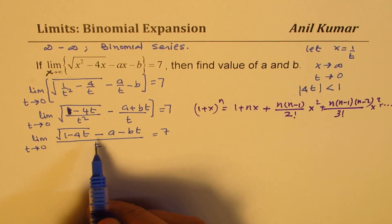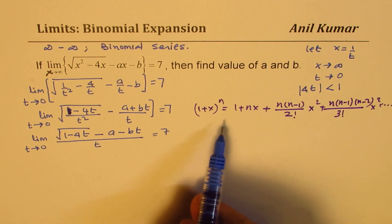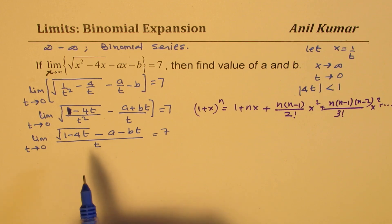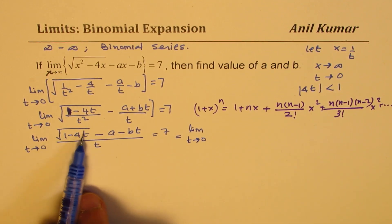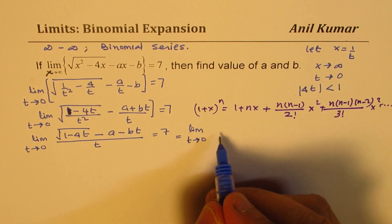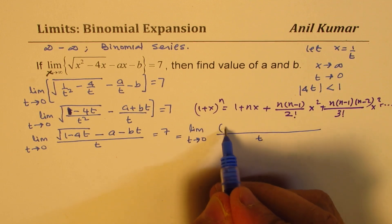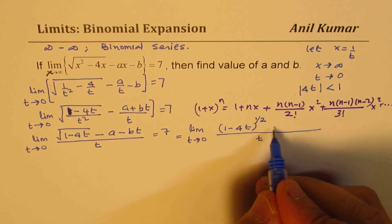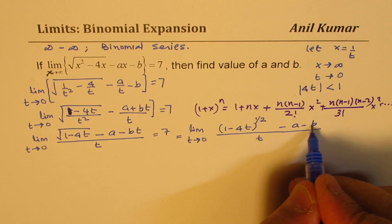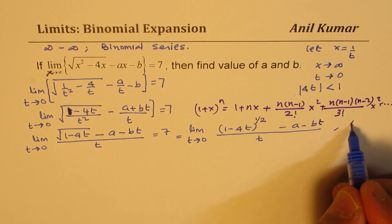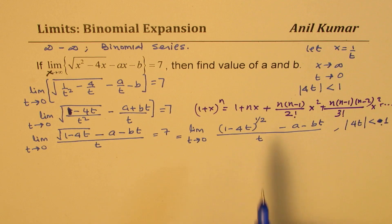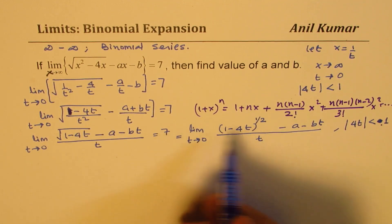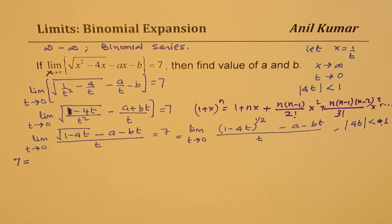Expanding (1 - 4t)^(1/2), the first term is 1, then we have (1/2)(-4t) which gives minus 2t, then (1/2)(1/2 - 1)/2! times (-4t)^2, and so on. So we get: 1 minus 2t plus (1/2)(-1/2)/2 times 16t^2 minus higher order terms. We then subtract a and bt, and all of this is multiplied by 1/t.